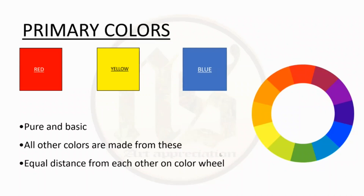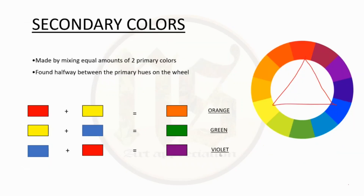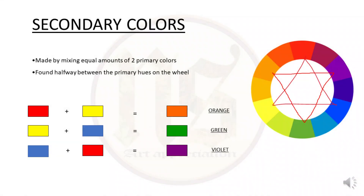Coming to classification of colors. The first category is primary colors: red, yellow and blue. They are pure and basic, equidistant on the color wheel, and all other colors are made from these. Next are secondary colors, made by mixing two primary colors. They are found halfway between the primary colors on the wheel. These are orange, green and violet. Remember to call it violet, not purple. An art student must get his or her terms right.